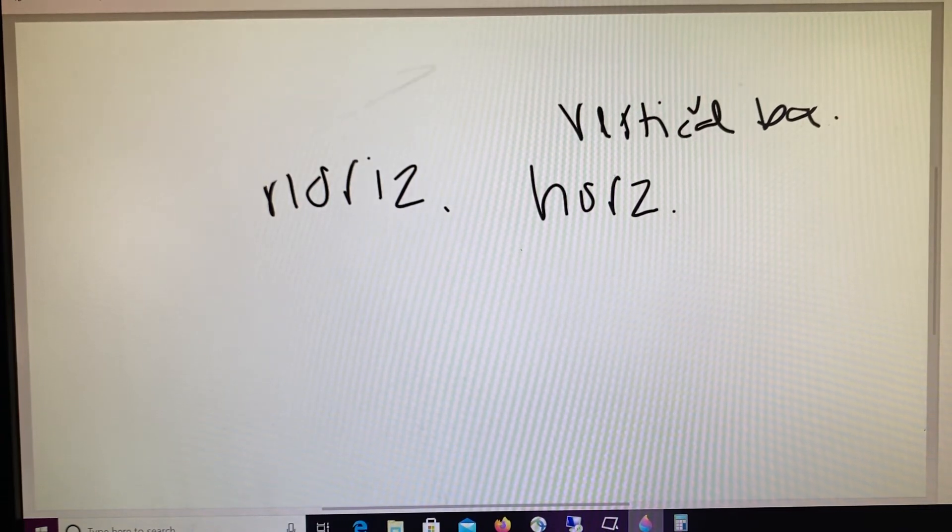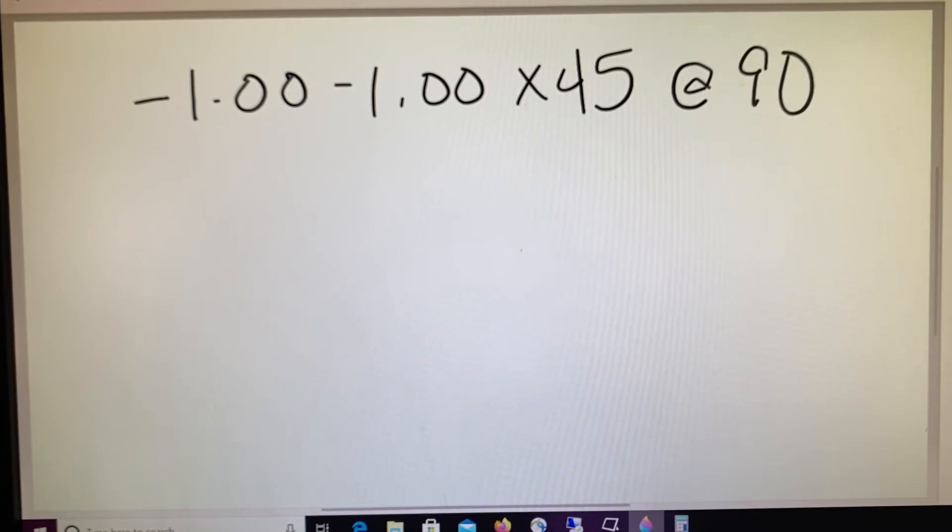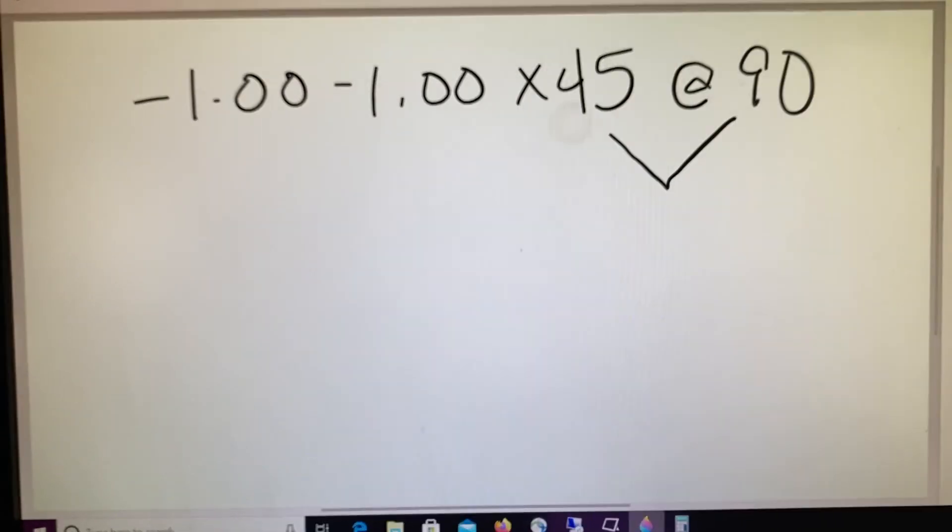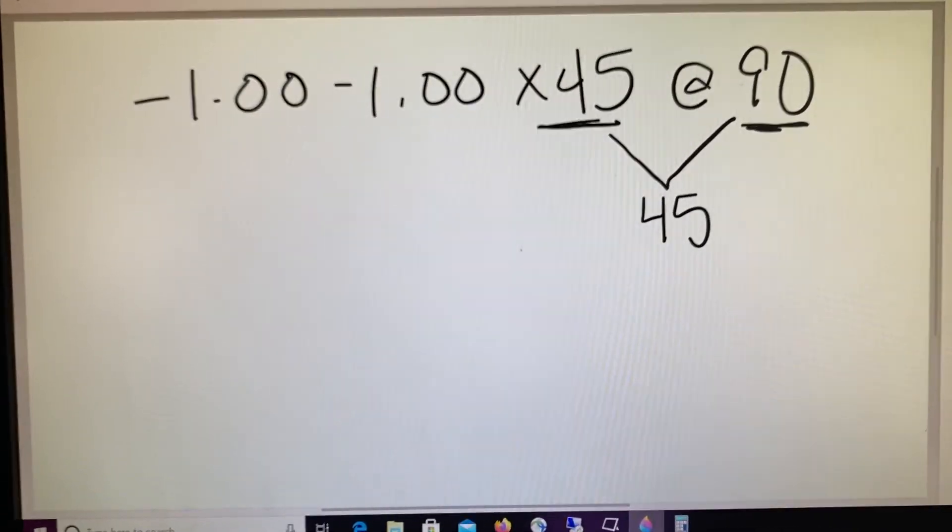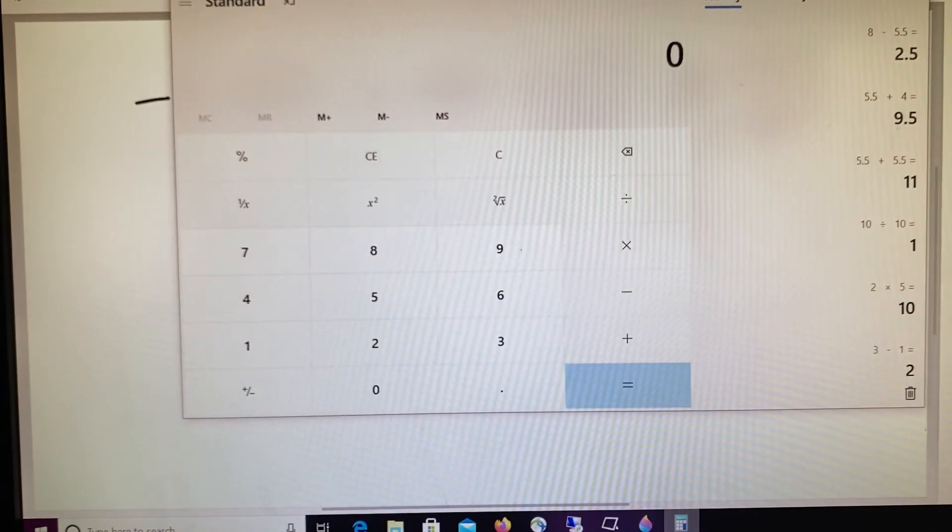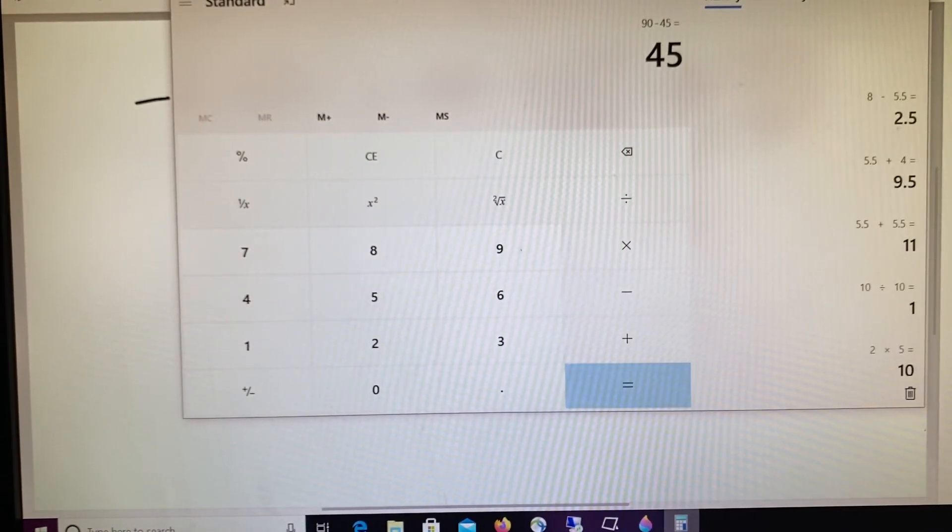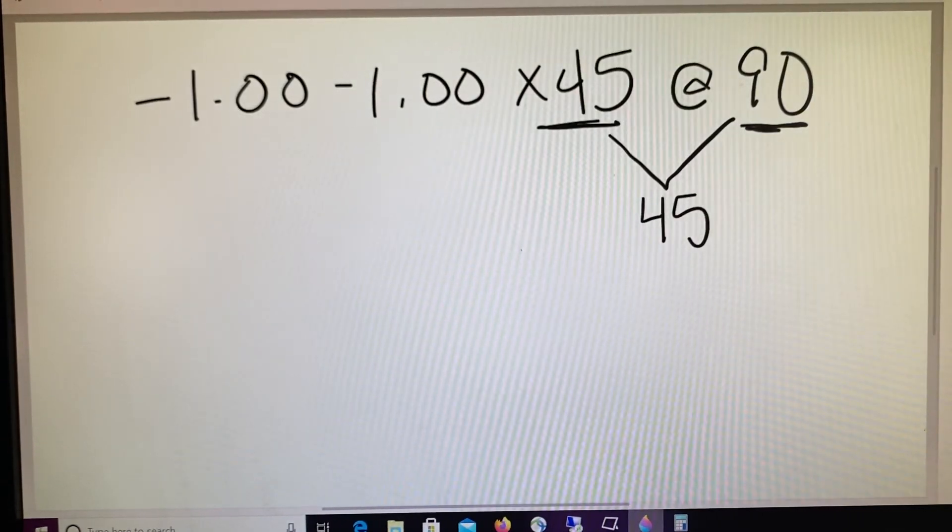So let's use what we just learned. If we had a prescription of minus one, minus one at 45 and the question pertained to vertical imbalance, we would need to know what the power was at the axis of 90. Step one in requested meridian is always to determine how far our given axis is from our requested axis. And in this case, we are 45 degrees away. We can throw that on the calculator. 90 minus 45 equals 45, just for confirmation.